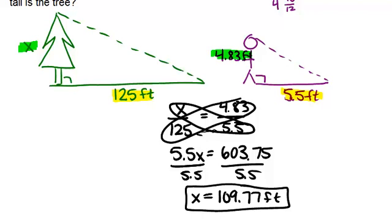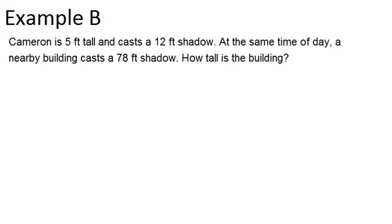And let's look at example B. Cameron is 5 feet tall and casts a 12 foot shadow. At the same time of day, a nearby building casts a 78 foot shadow. How tall is the building?